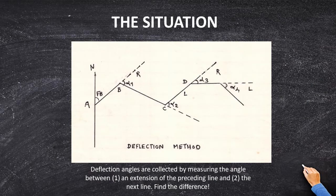Many of us may not even know what a deflection angle is because we don't use them very often. A deflection angle is collected by measuring the angle between an extension of the preceding line and the new line. Those projections extending past our point — that is our deflection line. The deflection angle is measured from the extension of the deflection line to the next point: AB down to B, BC extension connected to D, CD extension connected to DE.